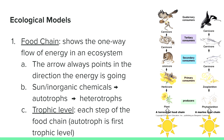A food chain is the most simple ecological model — it shows the one-way flow of energy in an ecosystem. The most important part of a food chain is that the arrow always points in the direction the energy is going. They always start from the sun or inorganic chemicals, then go to the autotrophs, then to the heterotrophs. Each step of the food chain is called a trophic level.